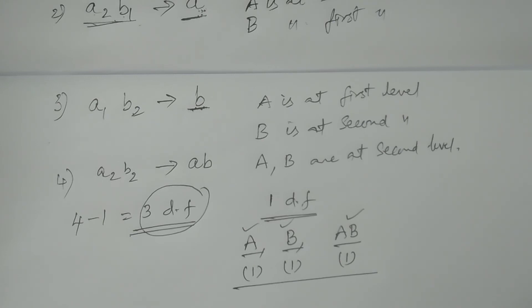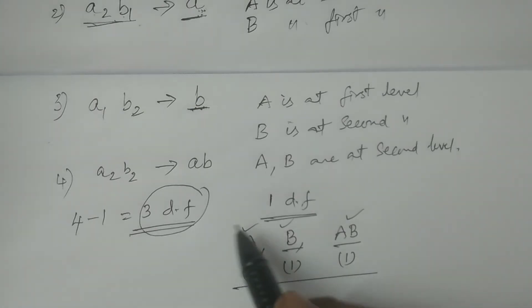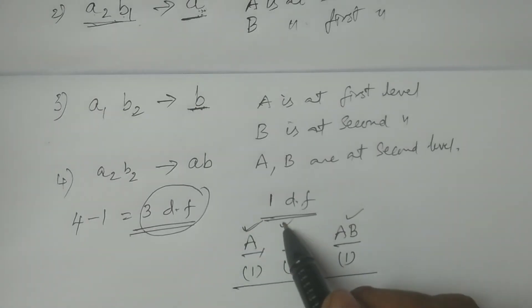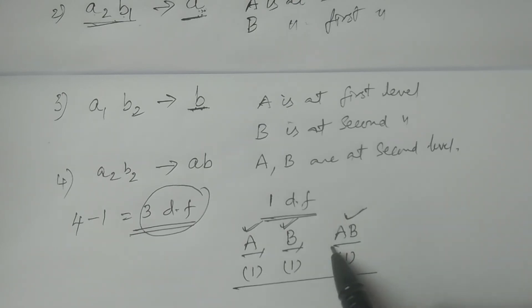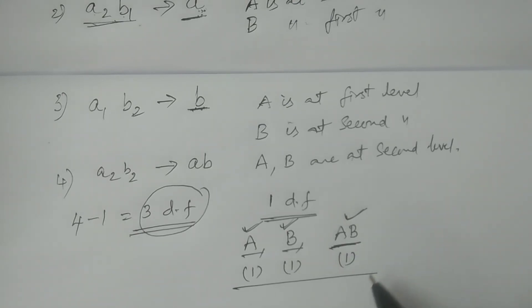If you consider treatment effects, there are three kinds: one is due to factor A, another is due to factor B, and another is due to the combination AB — this is called the interaction effect AB. A and B are called main effects.